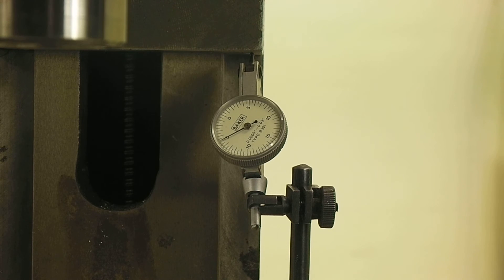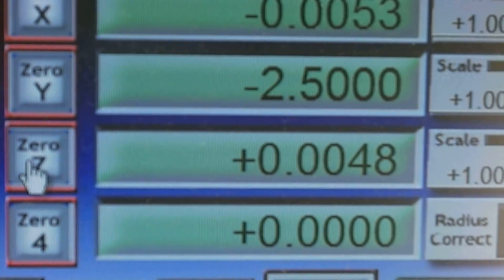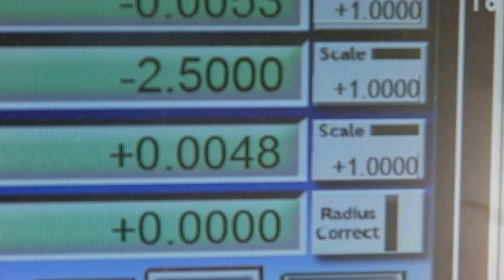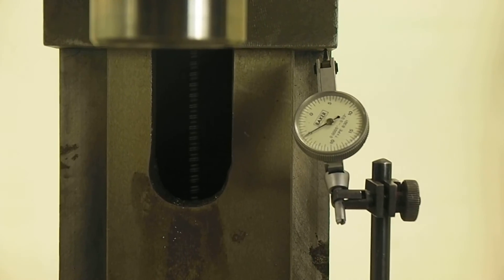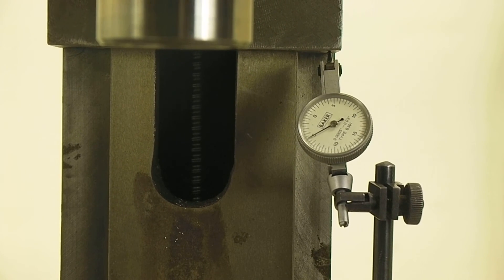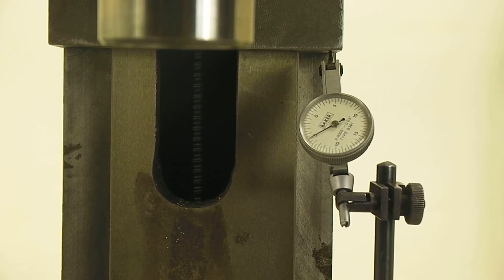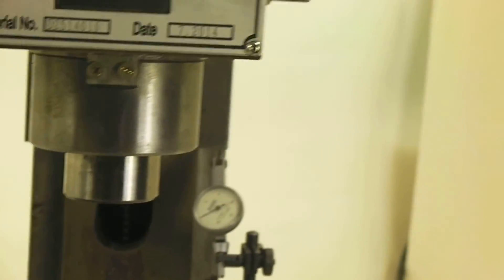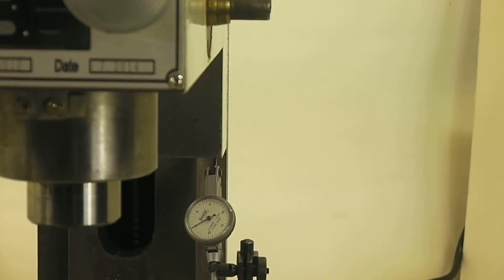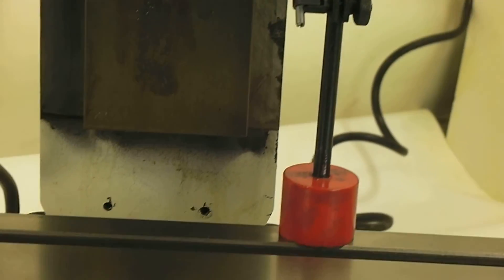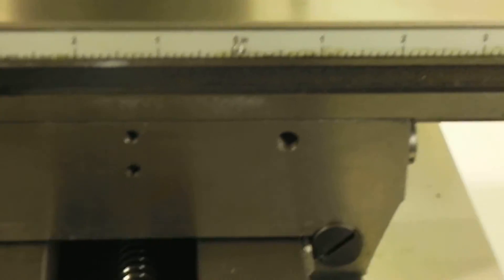So we're going to go ahead and go up to negative five thousandths. That's on five. And then on the Z, the DRO says 4.8. So we're getting three tenths of a thousandths backlash on the Z, which is really quite good. So I'm real happy with the X and the Z.